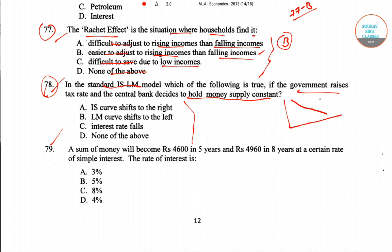To figure this out: when the government raises the tax rate, it is a contractionary fiscal policy, so the IS curve shifts left. When the central bank holds money supply constant, the LM curve remains unchanged. As a result, the interest rate falls from R0 to R1.